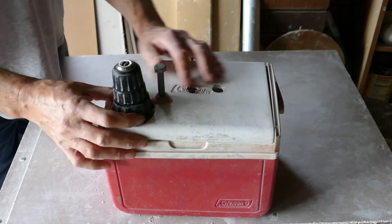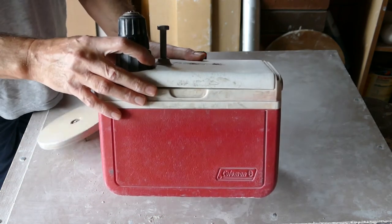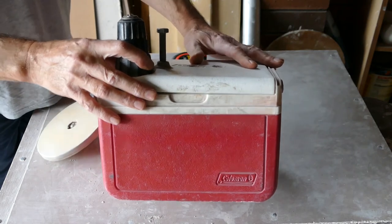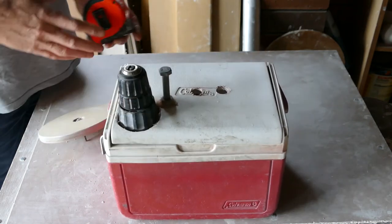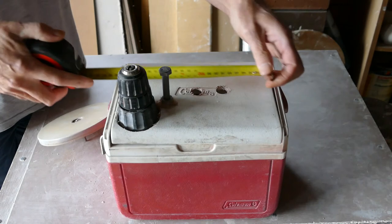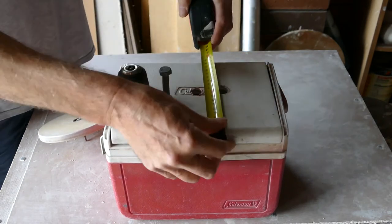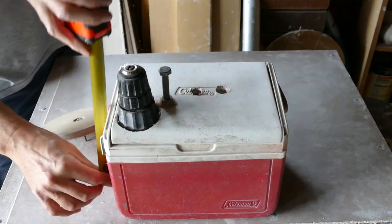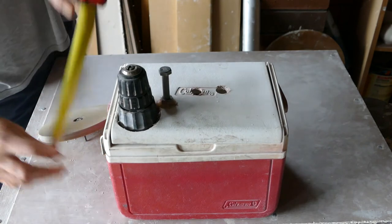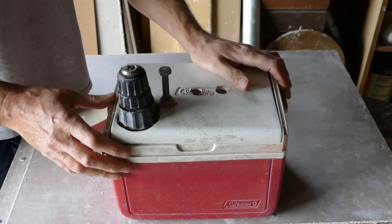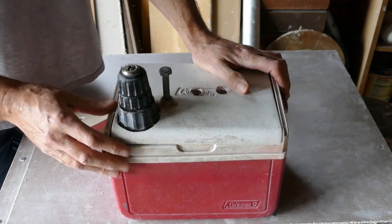And the drill is just pushed down into this old Coleman's esky. It measures around about 250mm by 190 by 170 deep. I've had this for a long time. I think I picked it up from Kmart. It was very cheap.